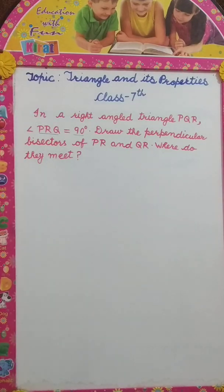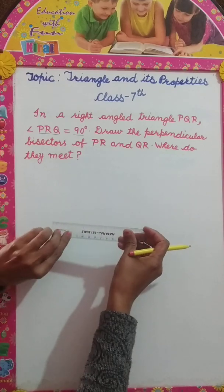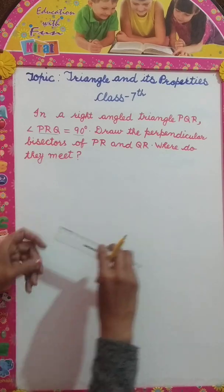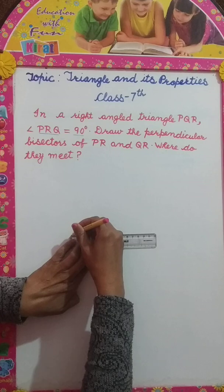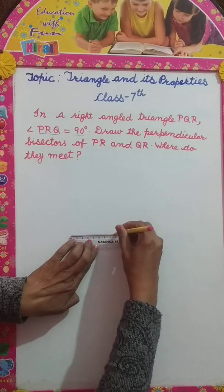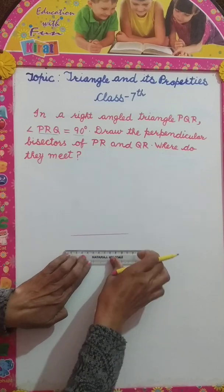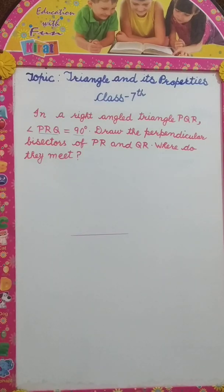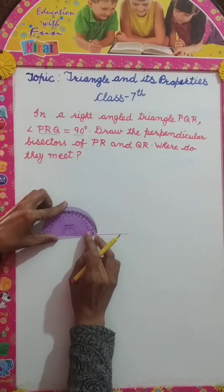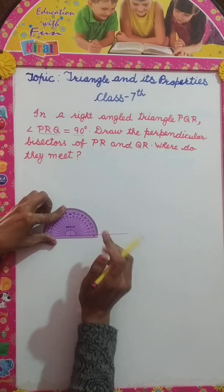Let's draw a right angled triangle first. A right angled triangle is that triangle in which one angle is of 90 degree. Let's take 90 degree.